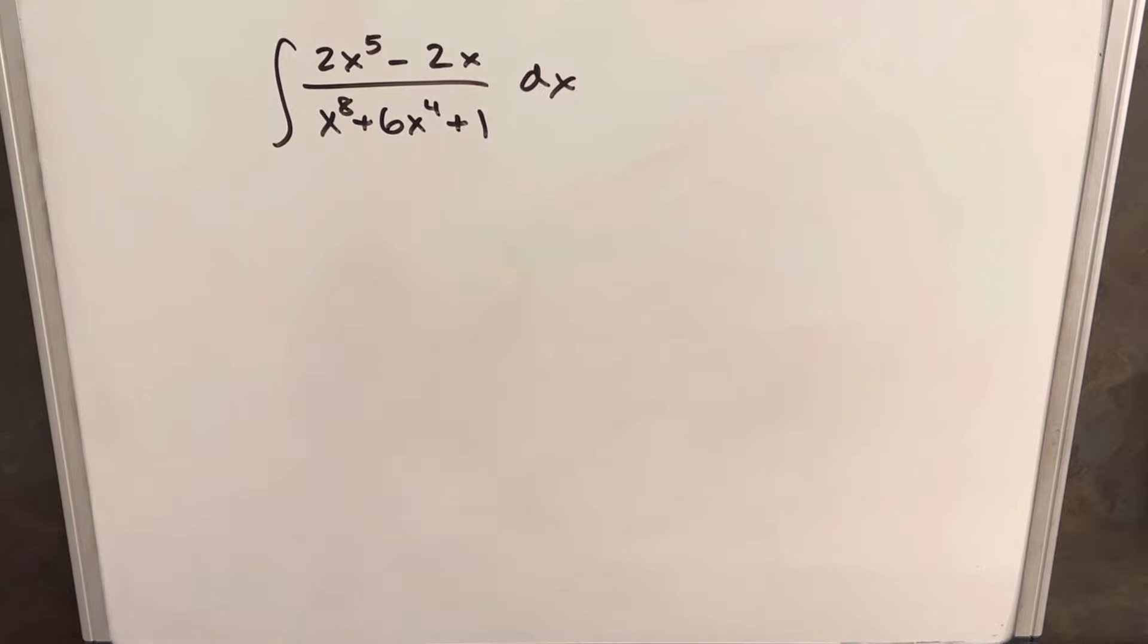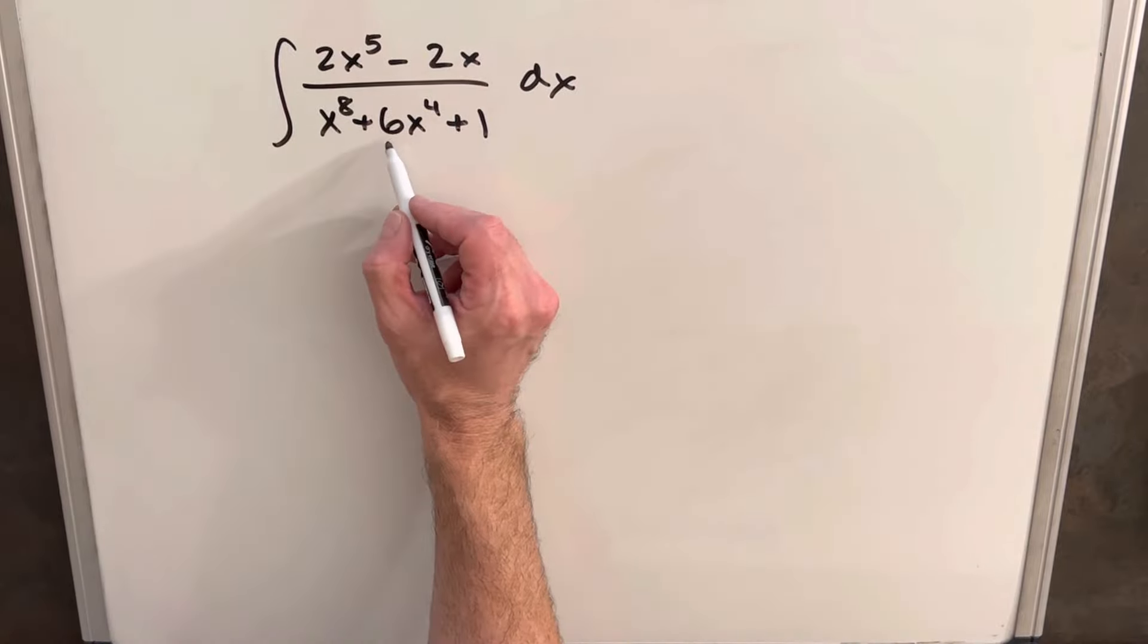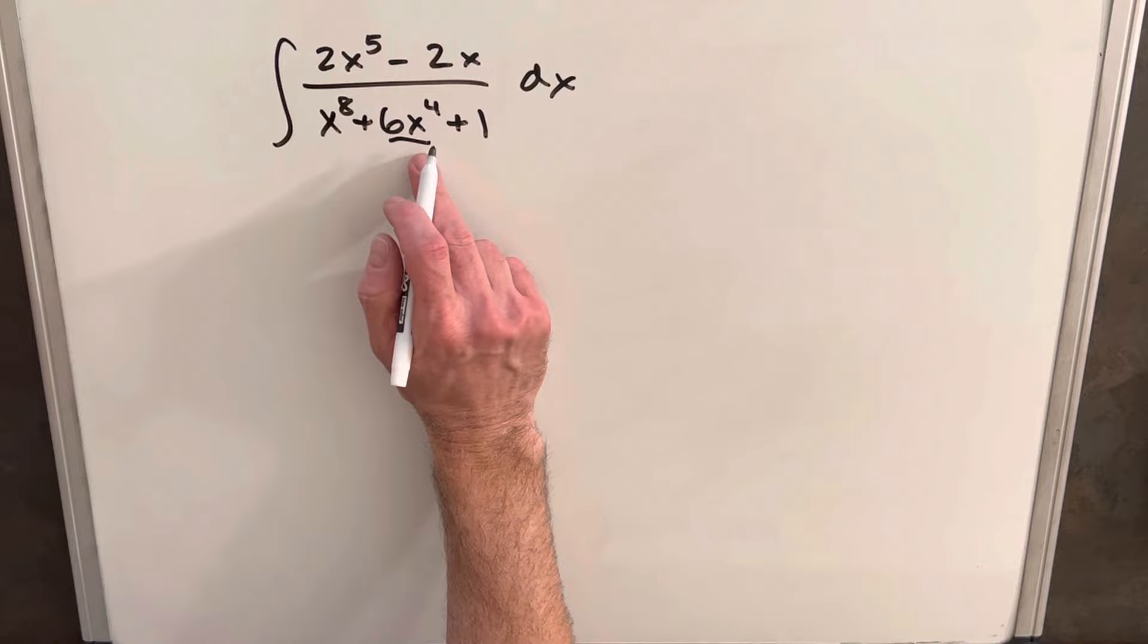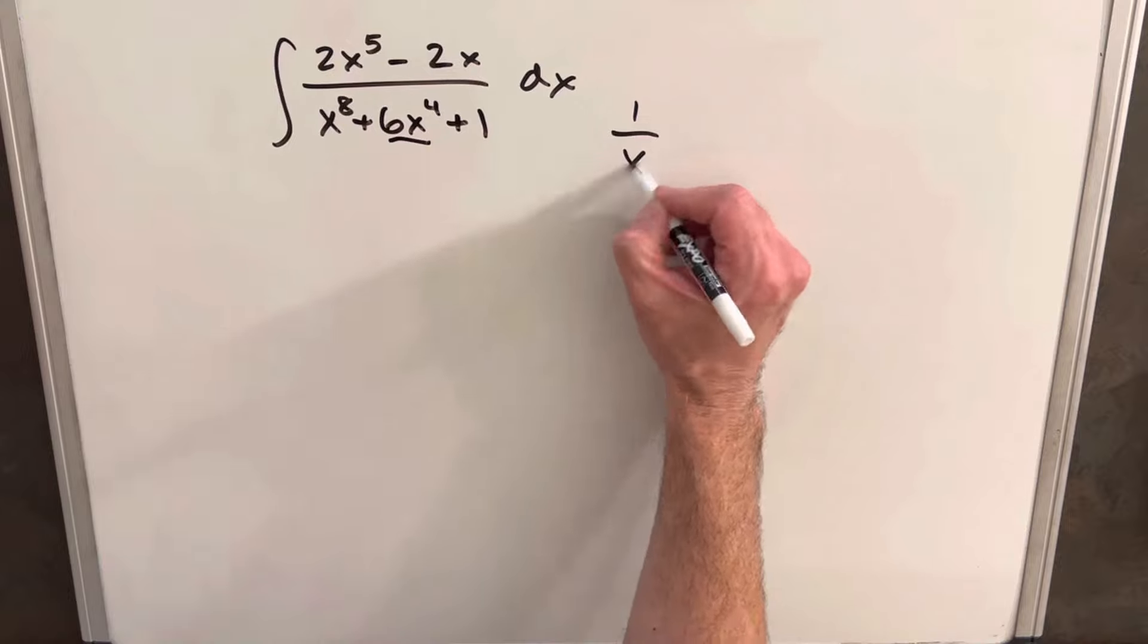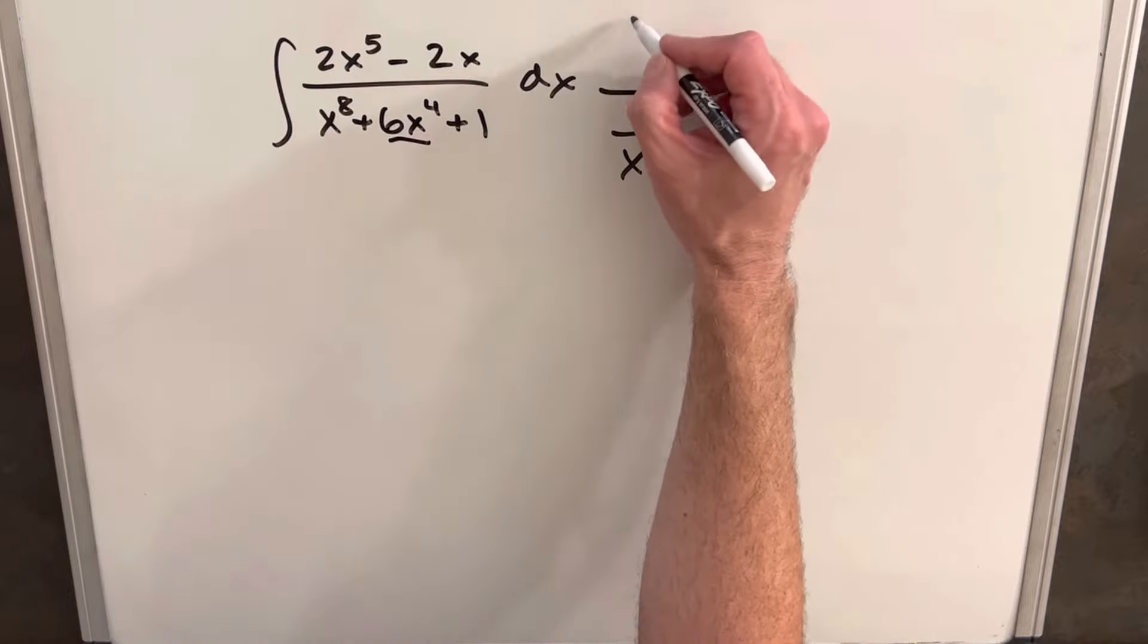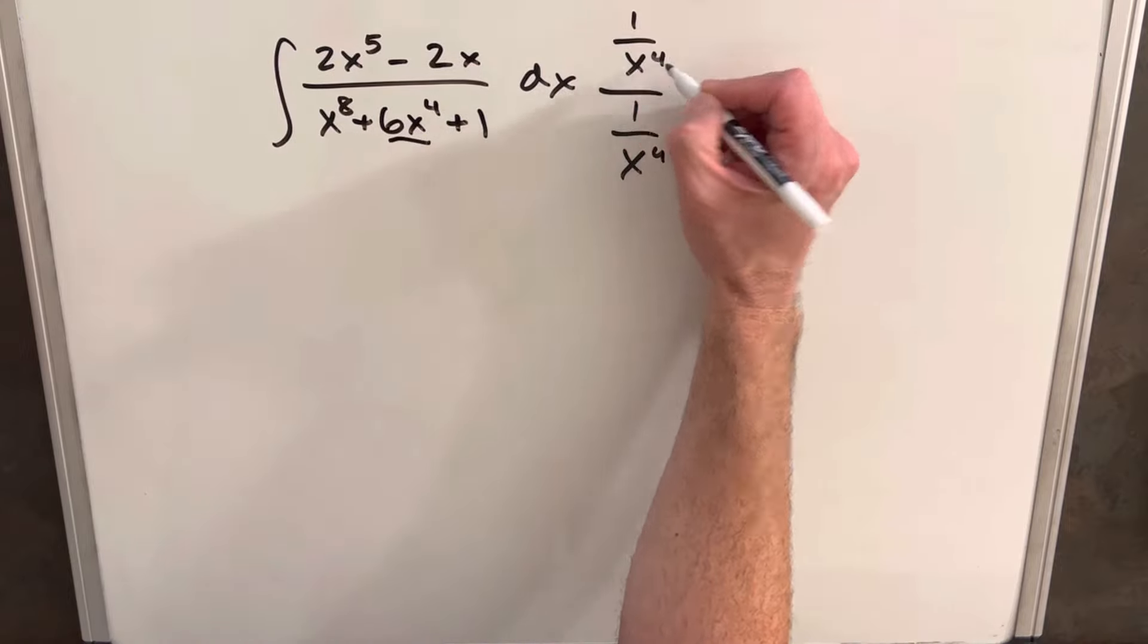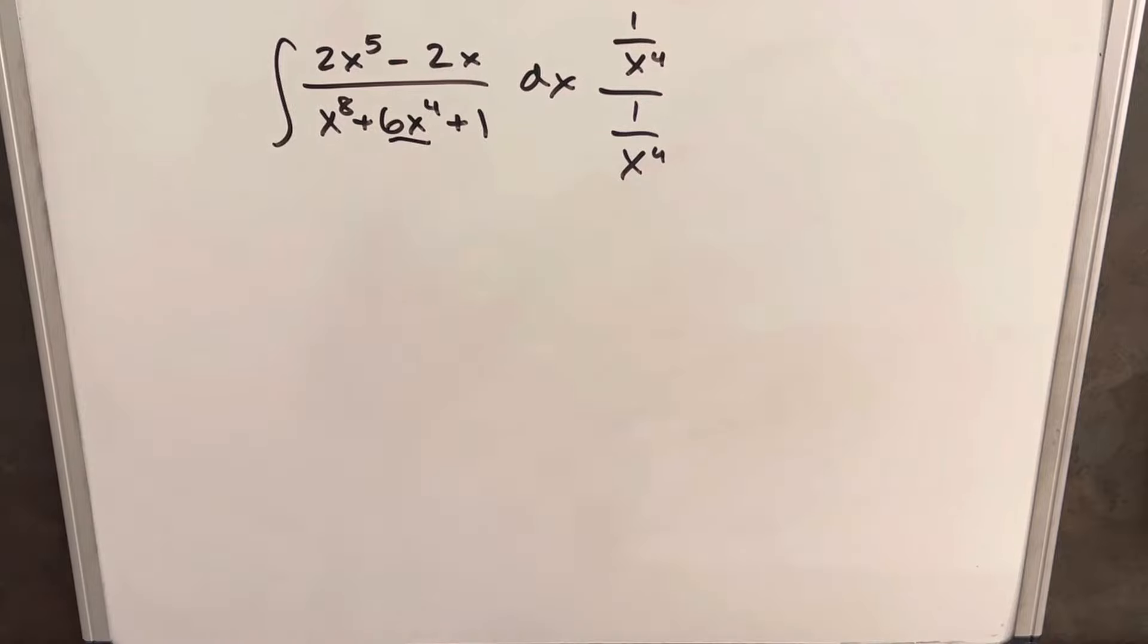So what I wanted to do is use a little trick, and what we want to do is, I focus on this term here, and I want to get rid of that x to the 4th. So what I can do is, I can multiply in the numerator and denominator by 1 over x to the 4th, and then let's see how that goes.